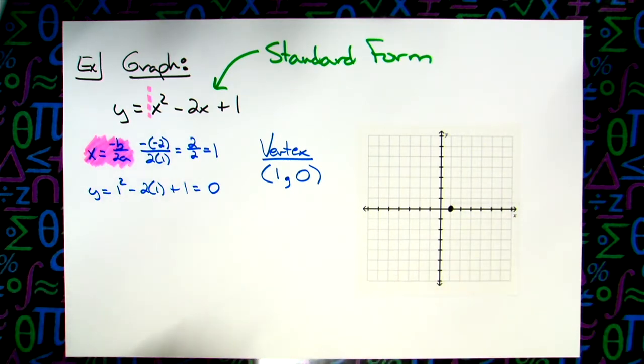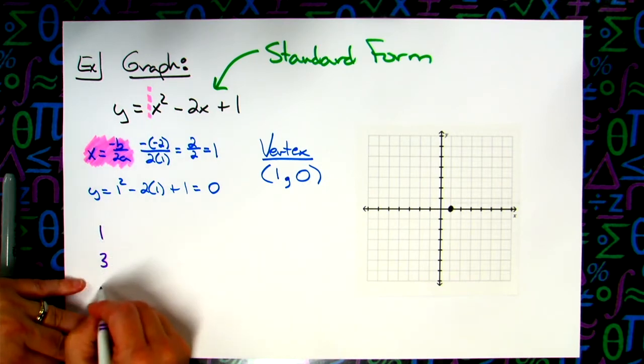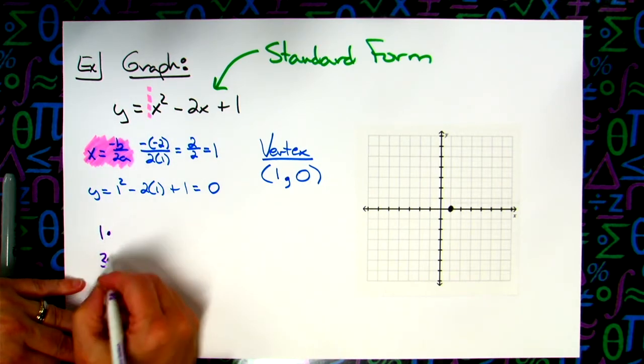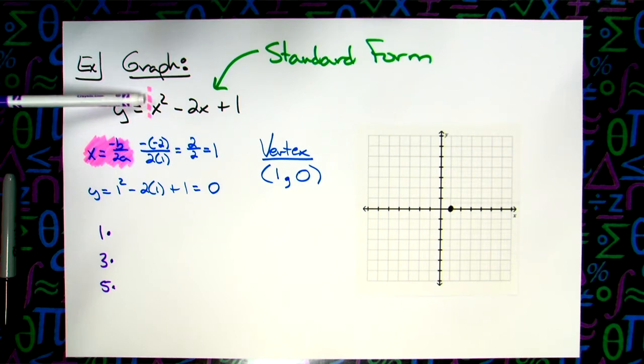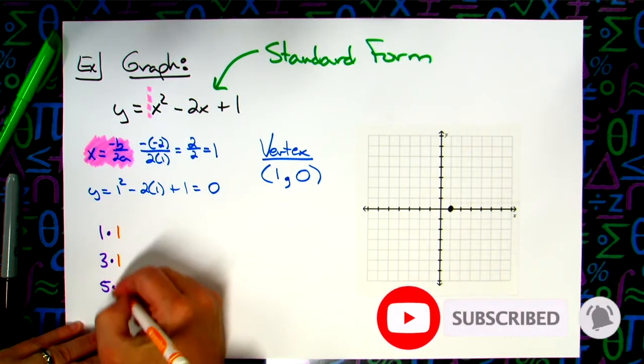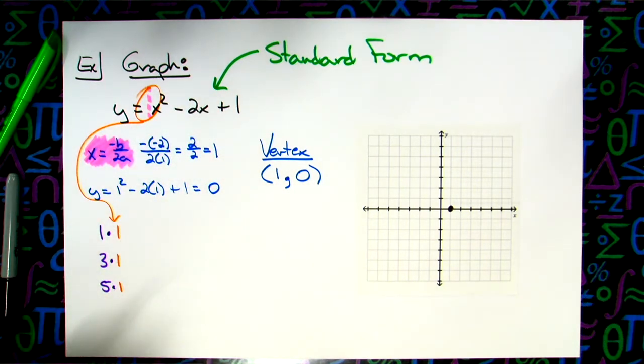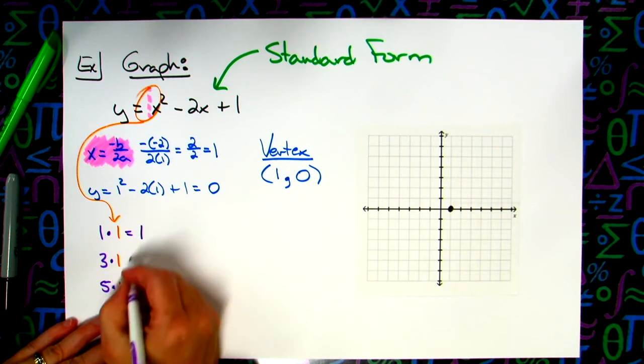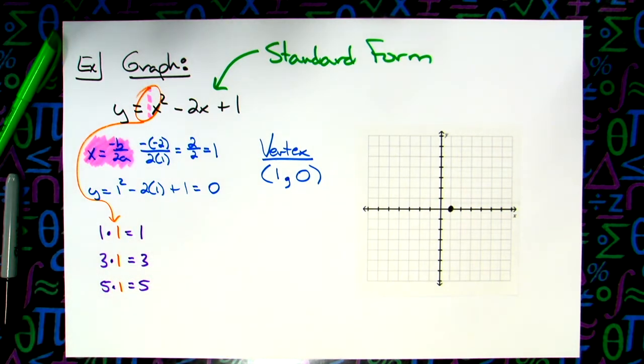Now our magic numbers are always going to be 1-3-5. What am I going to multiply it by this time? I multiply it by the leading coefficient of 1. So kind of boring there, it doesn't change because I'm multiplying it by the 1 right there. So then we're going to have 1-3-5, and they're positive numbers. And we just said the parabola goes up, so the parabola goes up. So we should be good.